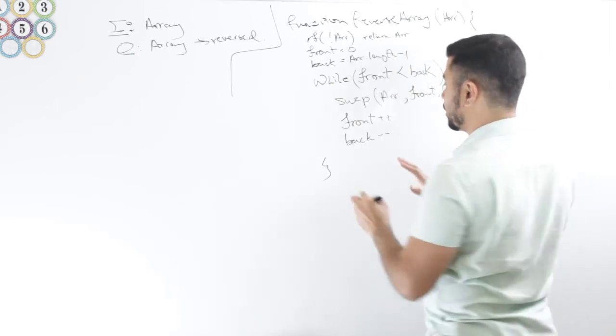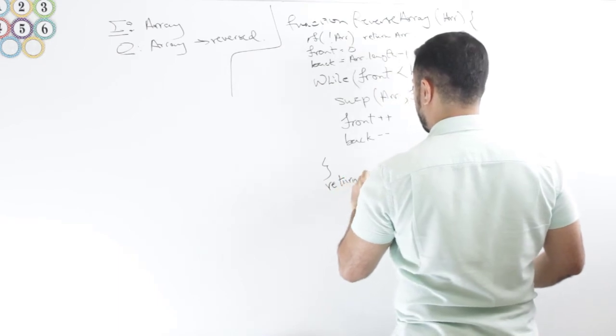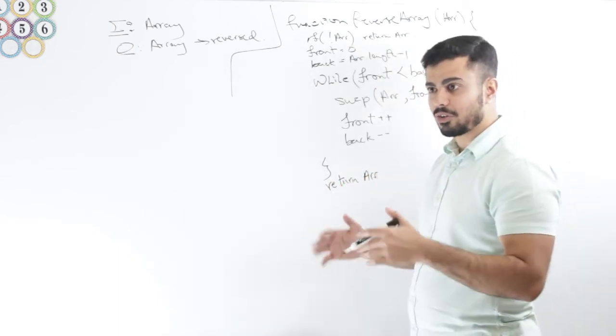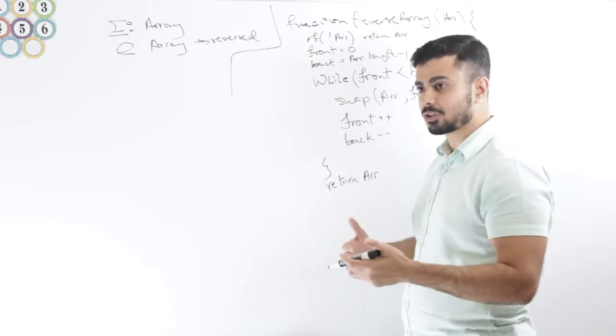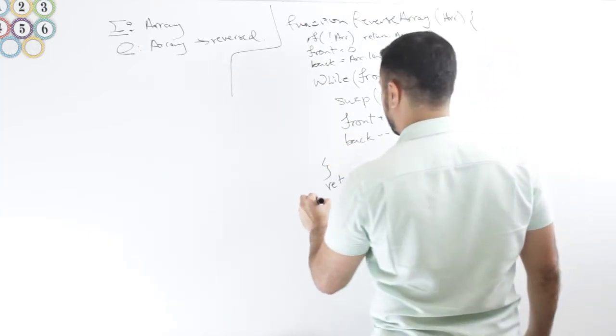And after the while loop is done, I just return the array. Technically I won't even need to return the array because it's doing it in place and the reference will still be there with the calling function, but as the output is the array itself, I will return it.